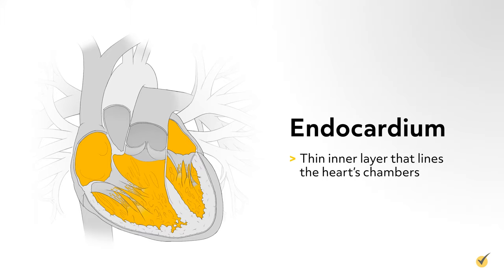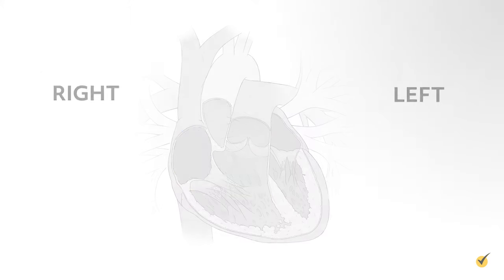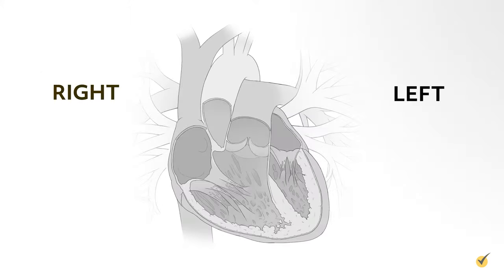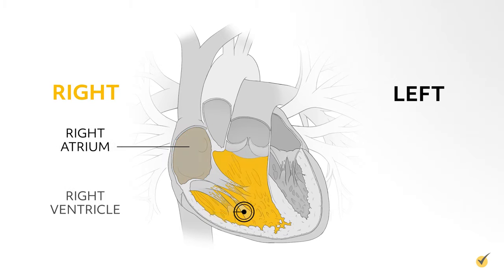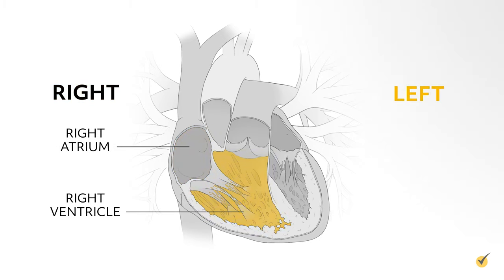Let's take a look at the internal anatomy of the heart. The heart is divided into four chambers: the right atrium and right ventricle, and the left atrium and left ventricle.